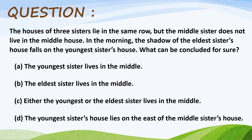Options. A: The youngest sister lives in the middle. B: The eldest sister lives in the middle. C: Either the youngest or the eldest sister lives in the middle. D: The youngest sister's house lies on the east of the middle sister's house.